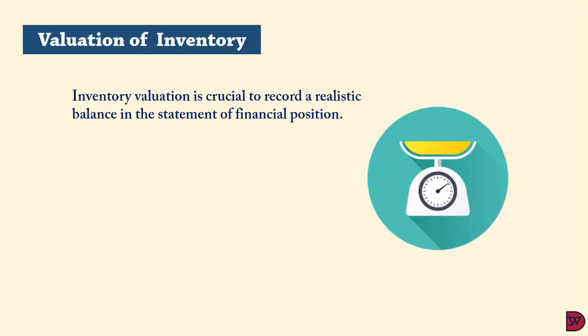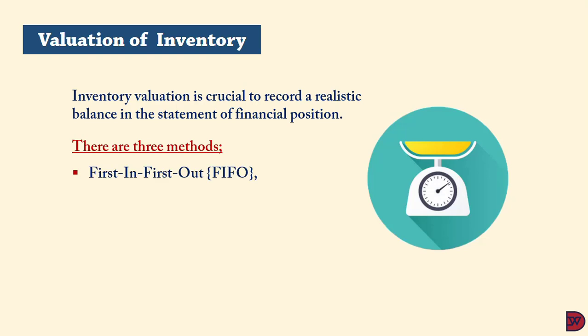Regarding the valuation of inventory: businesses purchase inventories several times throughout a period, so costs are likely to differ. If inventories are voluminous and identical, it will be nearly impossible to determine the batch remaining at the period end as closing inventory. There are three methods management may adopt: First In First Out (FIFO), Last In First Out (LIFO), and the Weighted Average Cost.